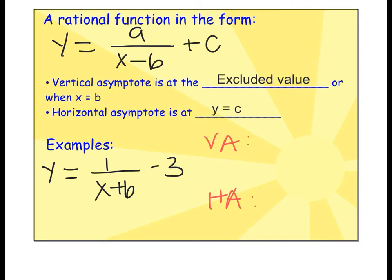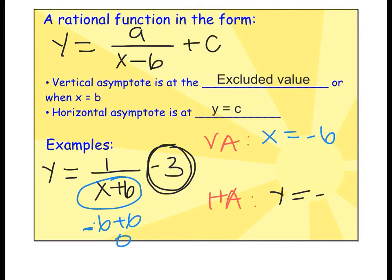Let's do an example. y equals 1 divided by x plus 6, then that whole thing is subtracted by 3. The vertical asymptote is at the excluded value, which comes from whatever makes the denominator 0. My vertical asymptote would be negative 6. If I plug negative 6 in, negative 6 plus 6 would give me 0, which I can't have. My horizontal asymptote is the number by itself, so y equals negative 3.